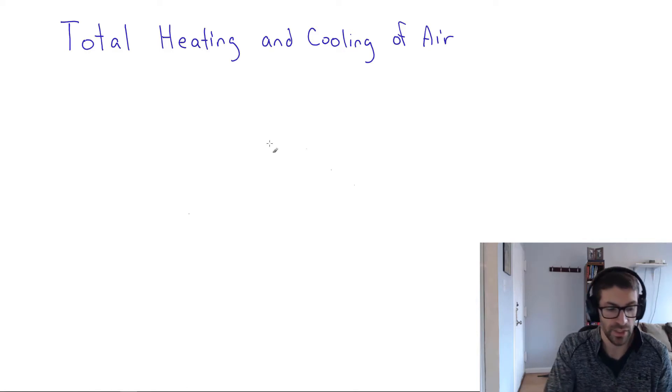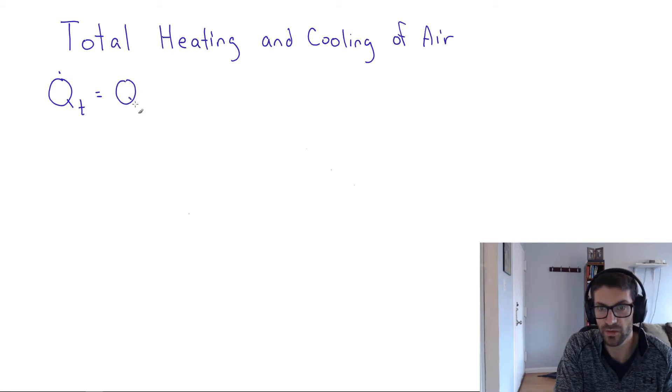So one way to handle the total would be to just add the sensible and latent together. That's not the purpose of this video, but I think it's worth mentioning. The total cooling is the sum of the sensible cooling and the latent cooling. So if you have rules of thumb for those and you want to handle them individually, it's perfectly viable and reasonable to do that.